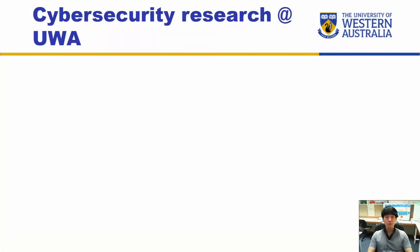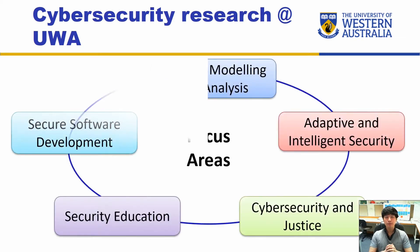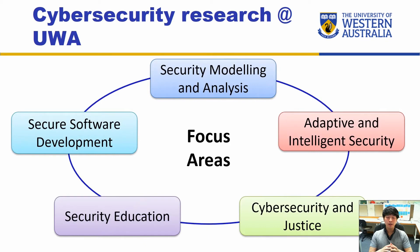Hello, in this video we'll be looking at research directions in cybersecurity, particularly what I do. At UWA I try to look at five main pillars or focus areas in cybersecurity: starting with security modeling and analysis, adaptive and intelligent security, secure software development, security education, and cybersecurity and justice. Let's have a look at each one and see what they are about.